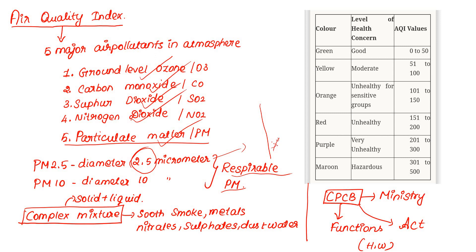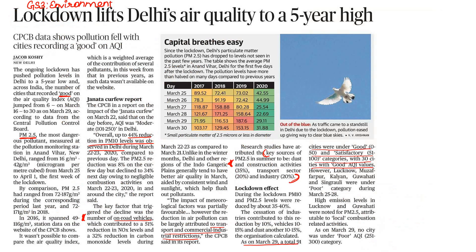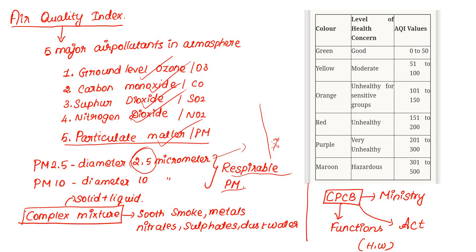The difference between PM2.5 and PM10 is their diameter. Because transport, vehicles, industries, and construction activities have stopped during lockdown, PM levels are very low in Delhi, resulting in improved air quality.